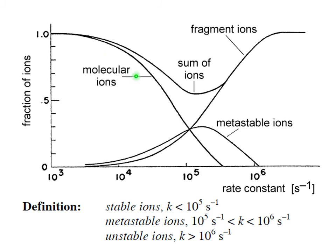So if your ions live more than 10 to the -5 seconds, that means the dissociation rate constant is less than 10^5. We say it is stable.